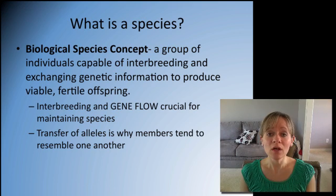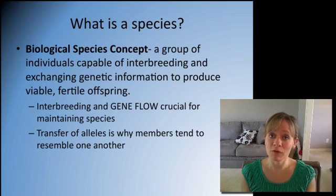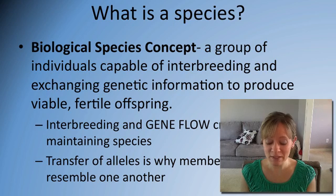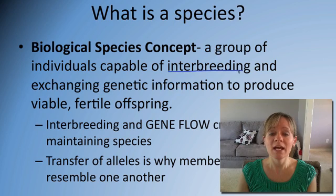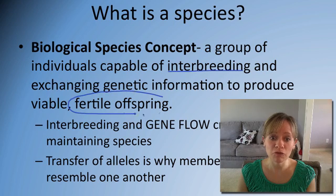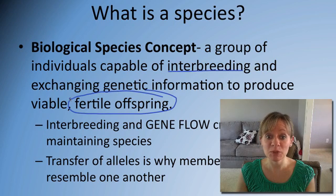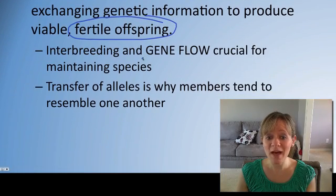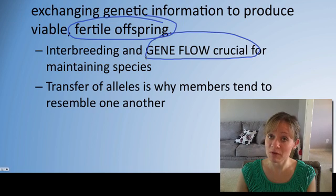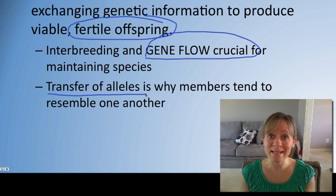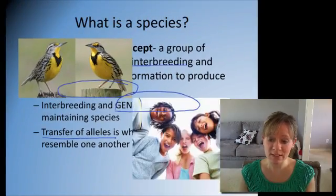Which brings us to the definition of a species. According to the biological species concept, a species is a group of individuals capable of interbreeding and exchanging genetic information to produce fertile and viable offspring. Gene flow between members of a species is very important because it's this transfer of alleles that maintains the species, and it's also why members of a species tend to look like one another.